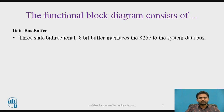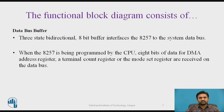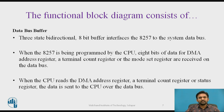The first functional block is the data bus buffer. This is a three-state bi-directional 8-bit buffer that interfaces the 8257 to the system data bus. When the 8257 is being programmed by the CPU, 8 bits of data for the DMA address register, terminal count register, or mode set register are received on the data bus. When the CPU reads the DMA address register, terminal count register, or status register, the data is sent to the CPU.